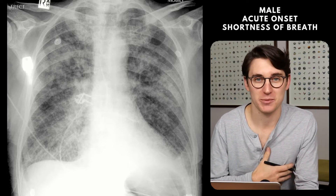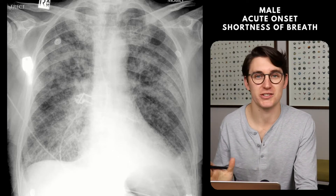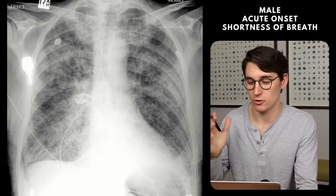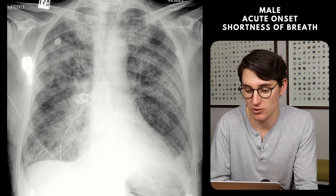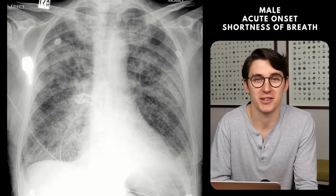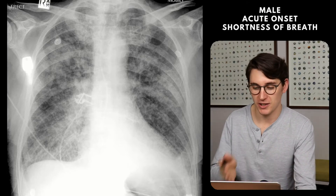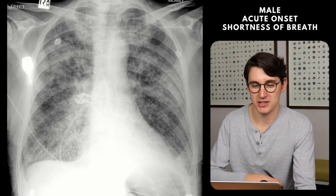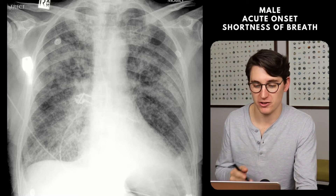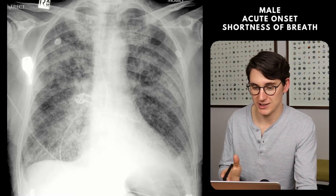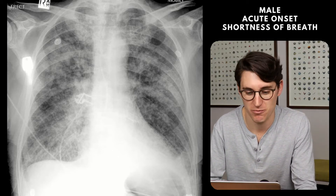I'm not an expert and my summaries are not perfect — there are multiple ways to approach this, so your method might be completely different to mine, and that's fine as long as we're coming to similar conclusions. I would start this case by saying: this is an erect mobile chest radiograph of a skeletally mature male presenting with acute onset shortness of breath.